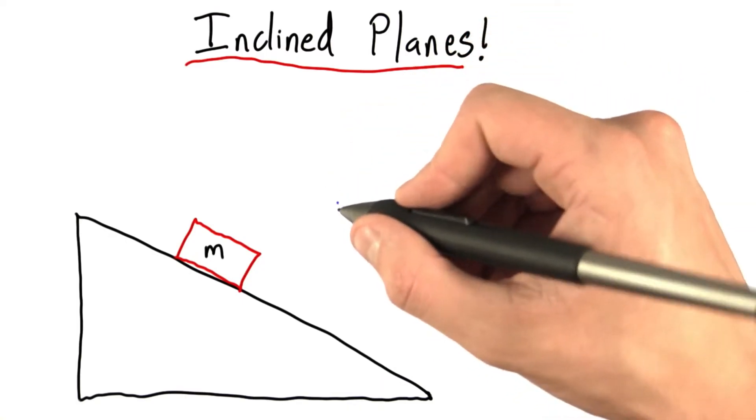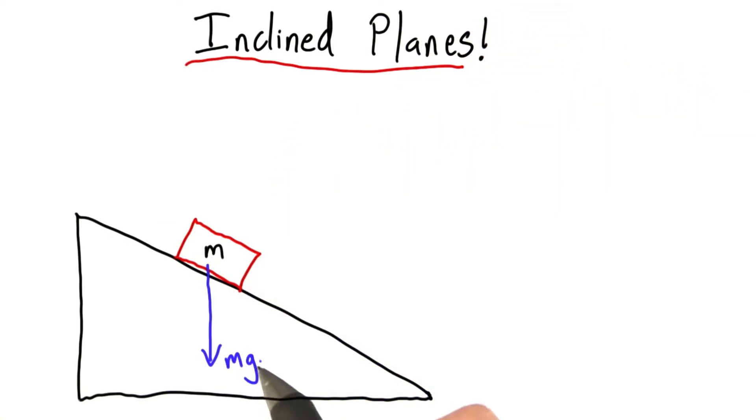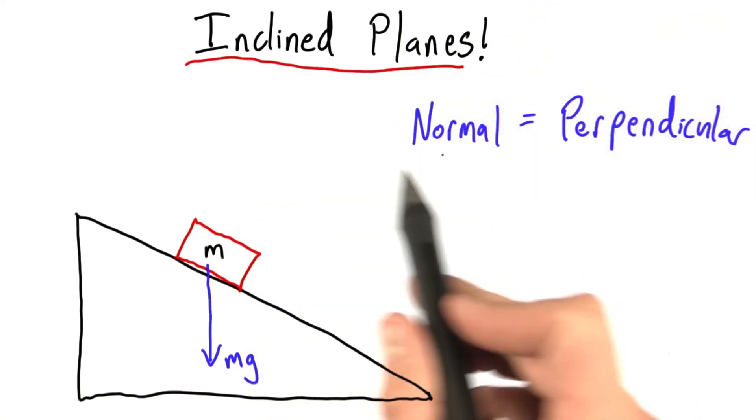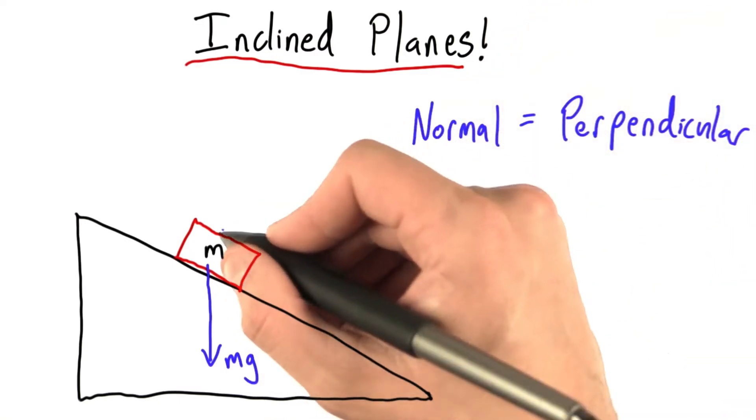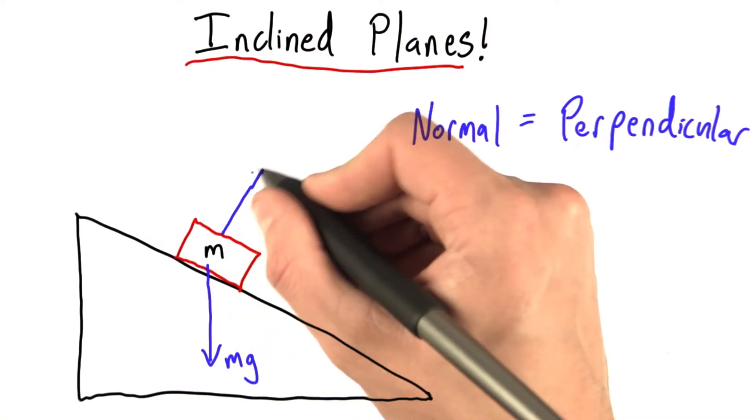Well, let's do what we always do and draw a force diagram. As always, weight points straight downwards, and the normal force, and remember, normal means perpendicular, actually points in this direction.